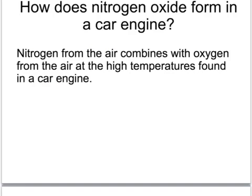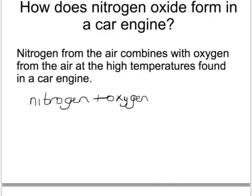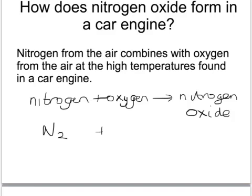How does nitrogen oxide happen to be in car exhausts when there's no nitrogen in petrol? This is because the nitrogen in the air combines with the oxygen in the air because of the high temperatures in a car engine, and this makes nitrogen oxide. In terms of symbol equations: nitrogen is N2, oxygen is O2, and nitrogen monoxide is NO. To balance this equation, we need to put a 2 in front of the NO.